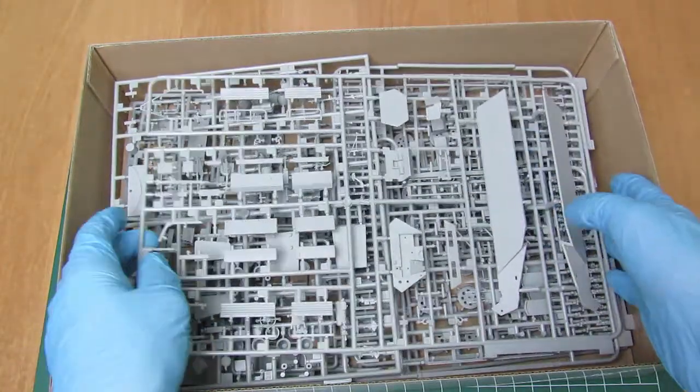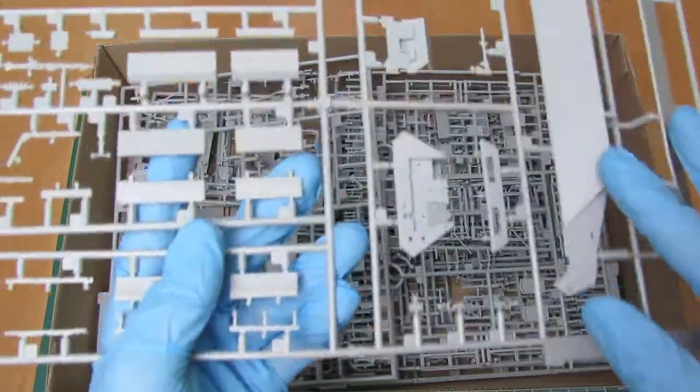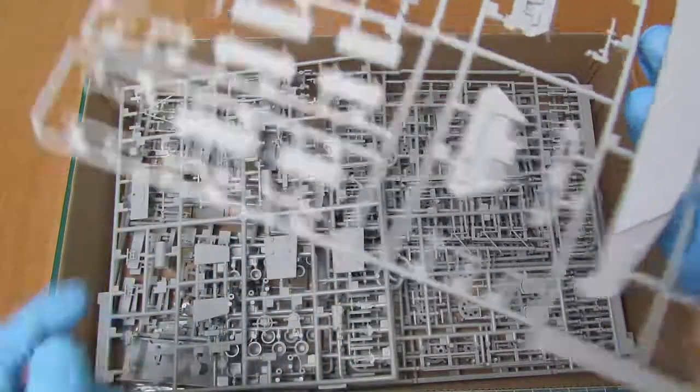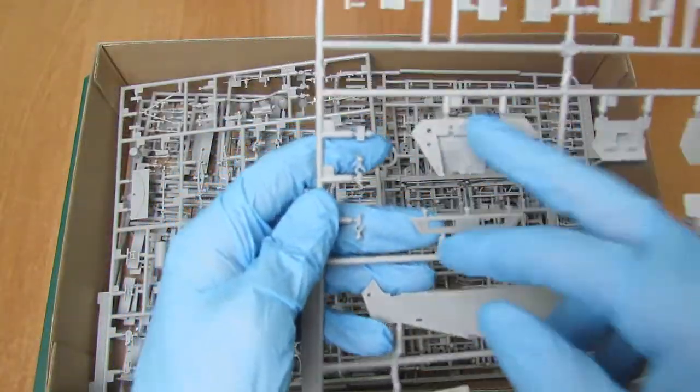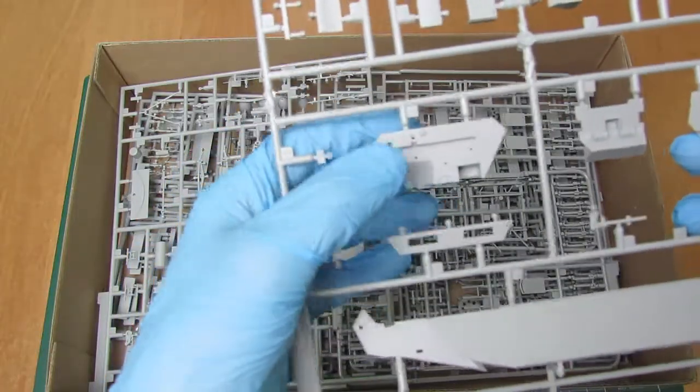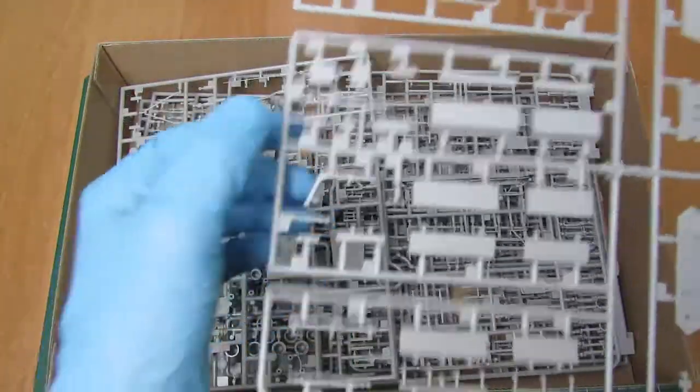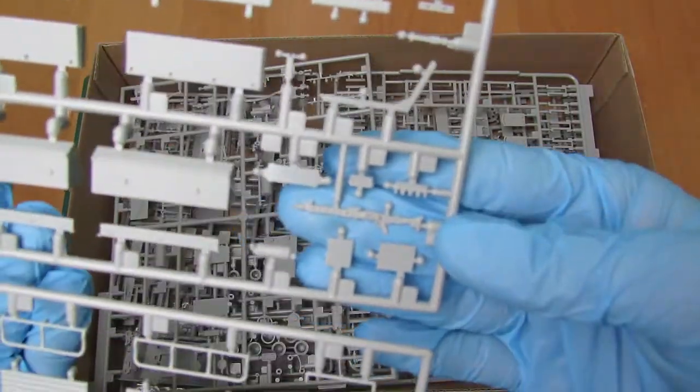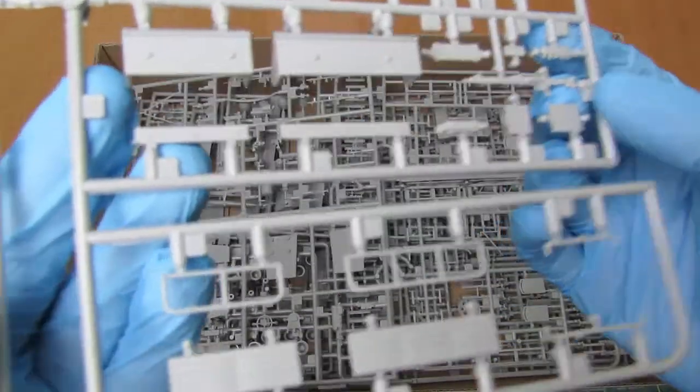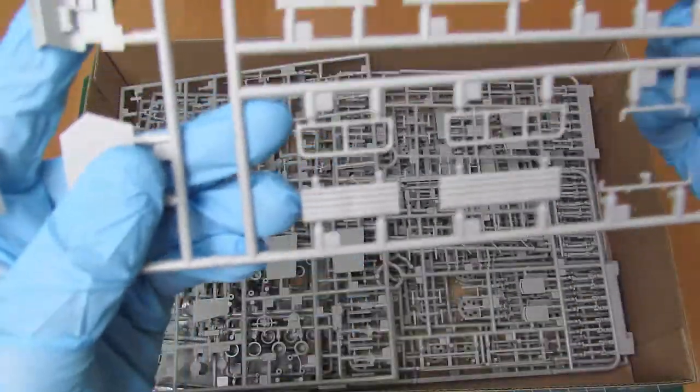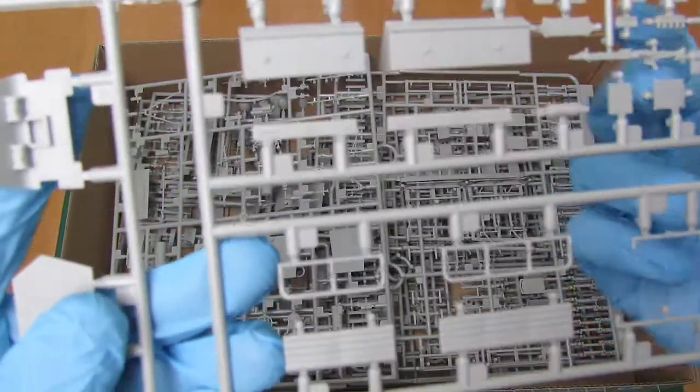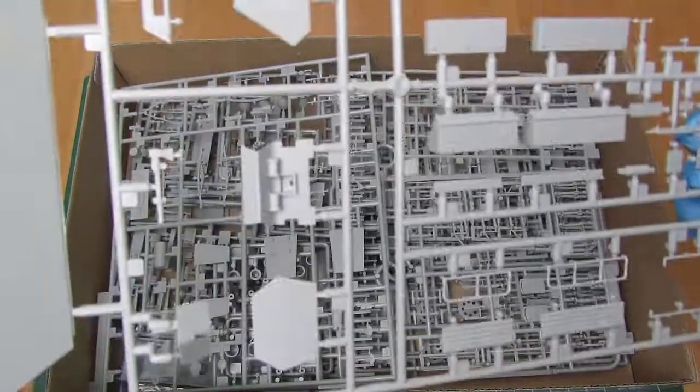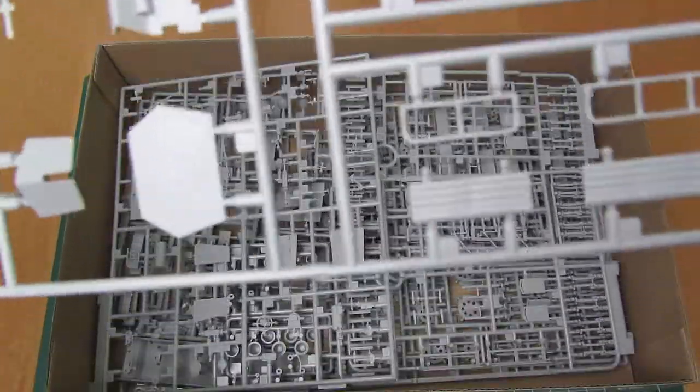Kolejna ramka to kolejne podwozie od boku pojazdu plus widzę siedziska i kokpit dla kierowcy. Karabin maszynowy, ja tu pokażę bliżej. Jest naprawdę bardzo dobrze odwzorowany. Widać bardzo dobrze, nawet jest prześwit od spustu. Będzie można strzelać.